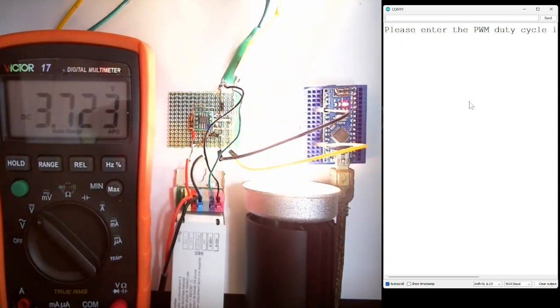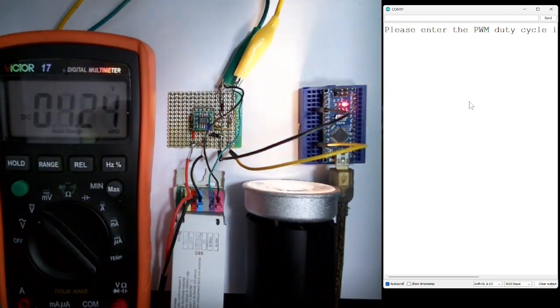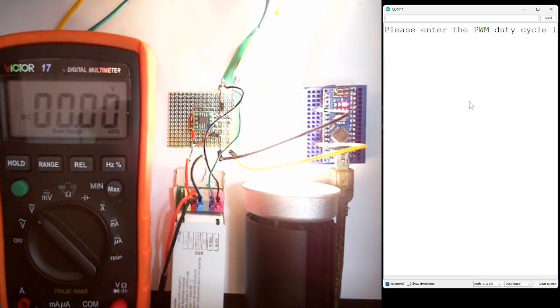You also see a Tridonic LED driver with a 0 to 10 volt dimming input and a 24 volt, 50 milliamp auxiliary power supply. This power supply would also be enough to power your Arduino if you add a 5 volt voltage regulator like a 7805.